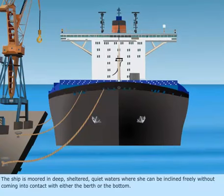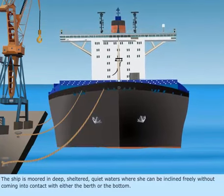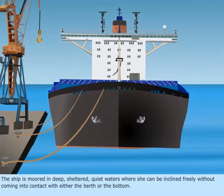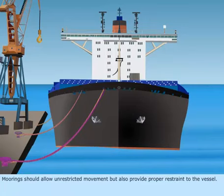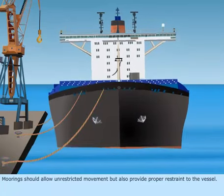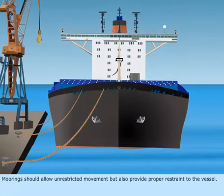The ship is moored in deep, sheltered, quiet waters where she can be inclined freely without coming into contact with either the berth or the bottom. Moorings should allow unrestricted movement but also provide proper restraint to the vessel.